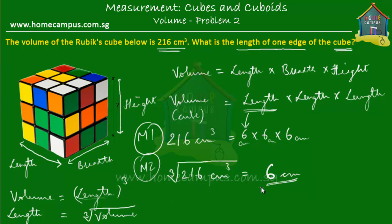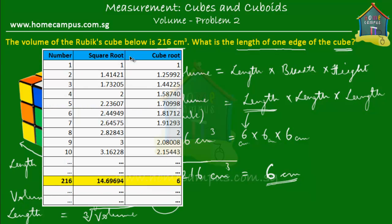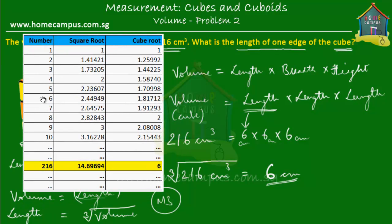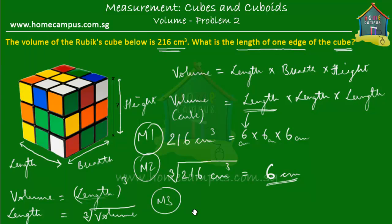Sometimes your school might not allow you to use a calculator. In that case, here is another method. What we used to get in school is a table called a cube root table. The cube root table has a column for number — which in our case is the volume — and a column for cube root, which gives us the length. We look up 216 and find the corresponding cube root is equal to six. So the cube root of 216 cm³ is six centimeters.